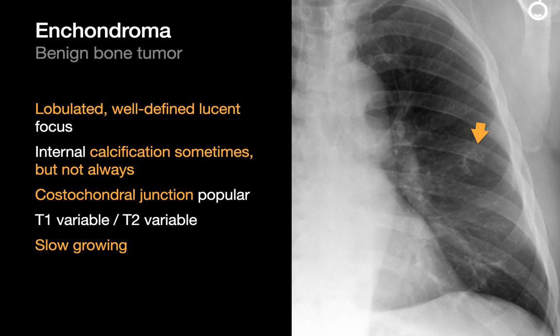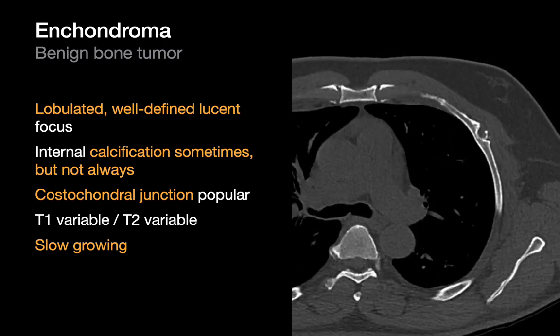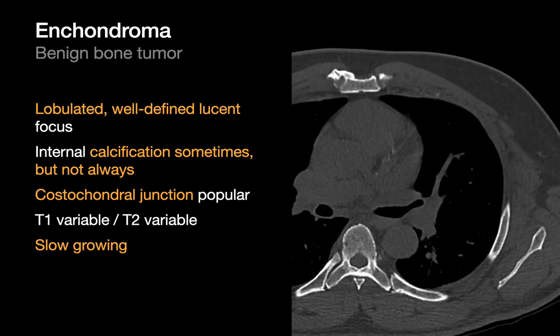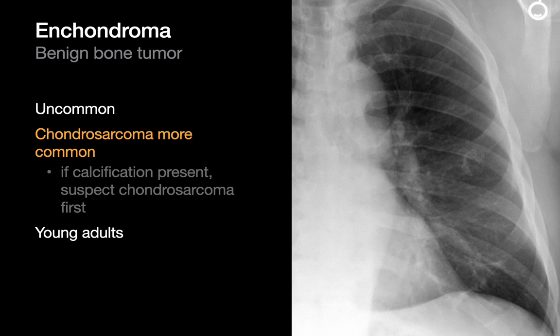Enchondromas are another benign bone tumor you might encounter in the chest wall, often involving the ribs or costochondral junctions. Like fibrous dysplasia, they're slow growing. However, enchondromas are much less common than fibrous dysplasia in the chest wall, and some report that chondrosarcomas are actually more common than enchondromas in the chest wall — so caution is warranted with this diagnosis, and MSK radiology consultation can be helpful.